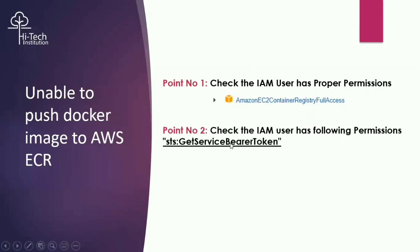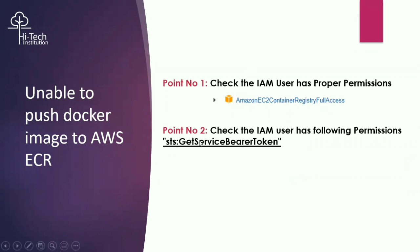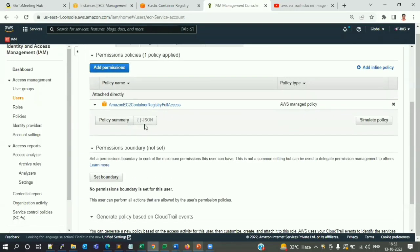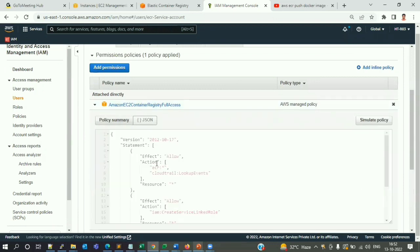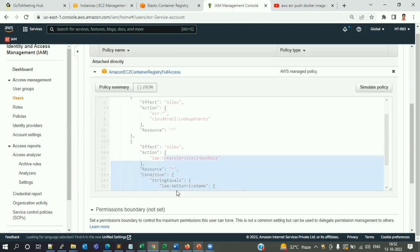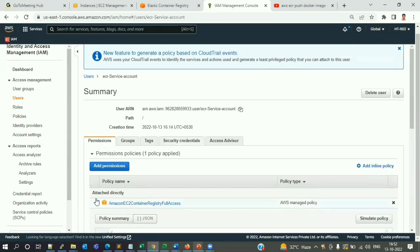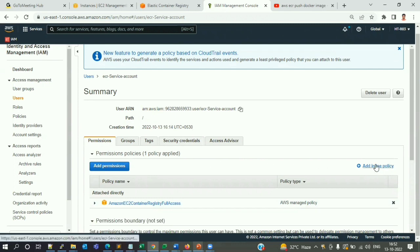Point two: check that the IAM user has the STS permission. When your ECR service account authenticates for pushing images, there is something called 'sts:GetServiceBearerToken' — specific permissions for assuming the repository and pushing the image. This permission is mandatory for authentication. When checking, we can confirm the STS-related permission is not available here.